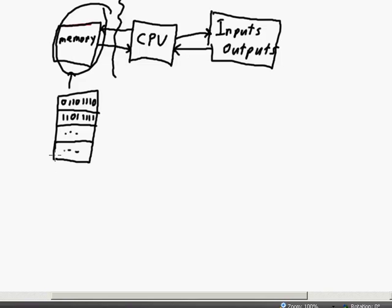All these blocks of memory are filled with bits. Without any context, all those bits are just bits — they don't have any meaning. We could convert those bits into decimal form, but those bits are not necessarily representing a decimal number. They could be representing anything: a program, an image, an audio file, a video, or data within a Word document. The list goes on and on.